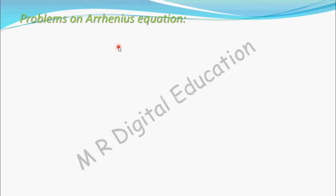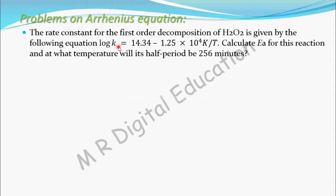Let's see one more problem on the Arrhenius equation. The rate constant for the first order decomposition of H₂O₂ is given by the following equation: log K = 14.34 − 1.25 × 10⁴ K/T. Calculate Ea for this reaction and at what temperature will its half-life period be 256 minutes.